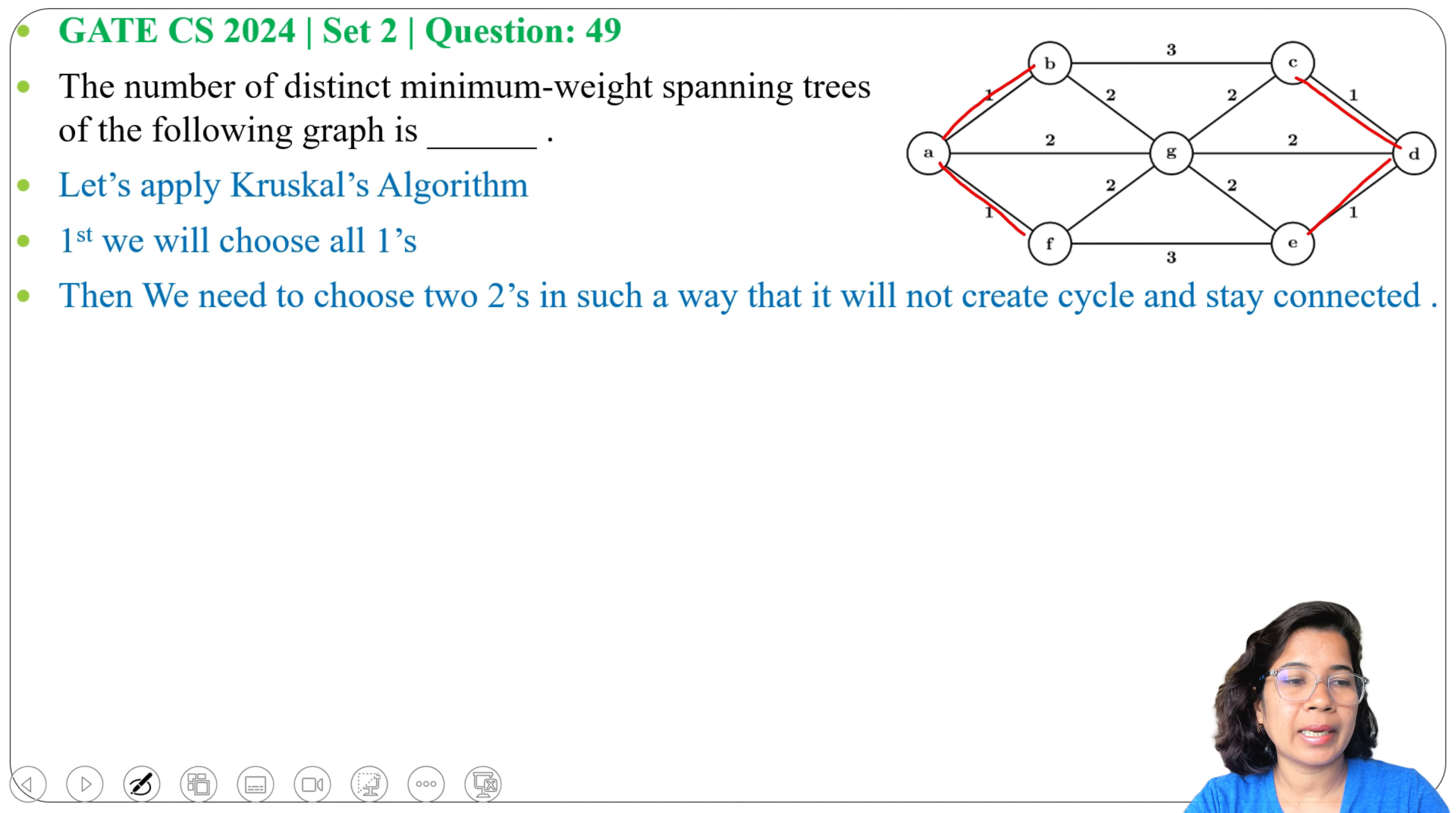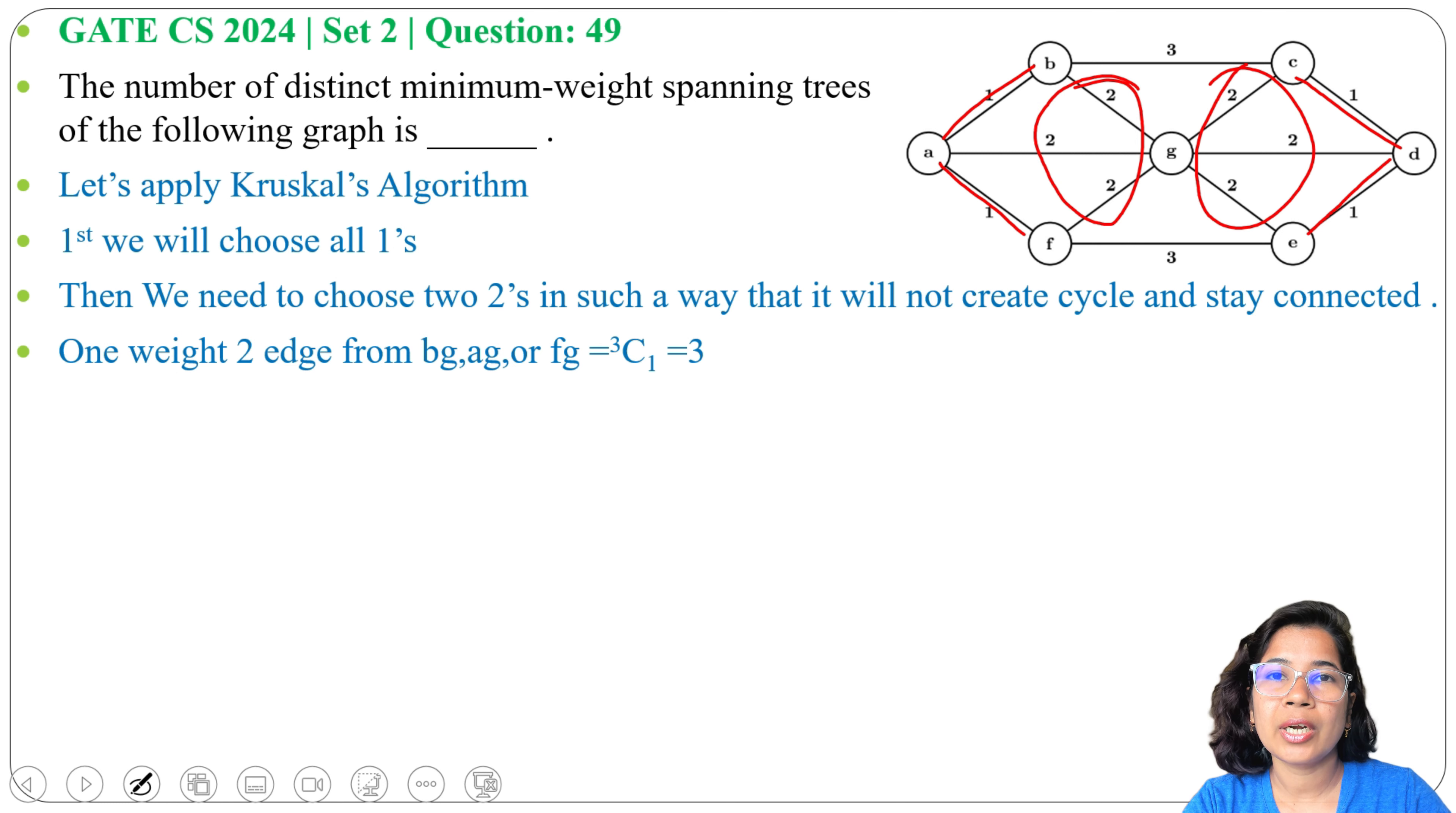The spanning tree should be connected and there should not be any cycle. From these three edges with weight 2, we'll choose one. From BG, AG, and FG, we'll choose one edge having weight 2. We can do this in 3 ways - 3C1 equals 3.